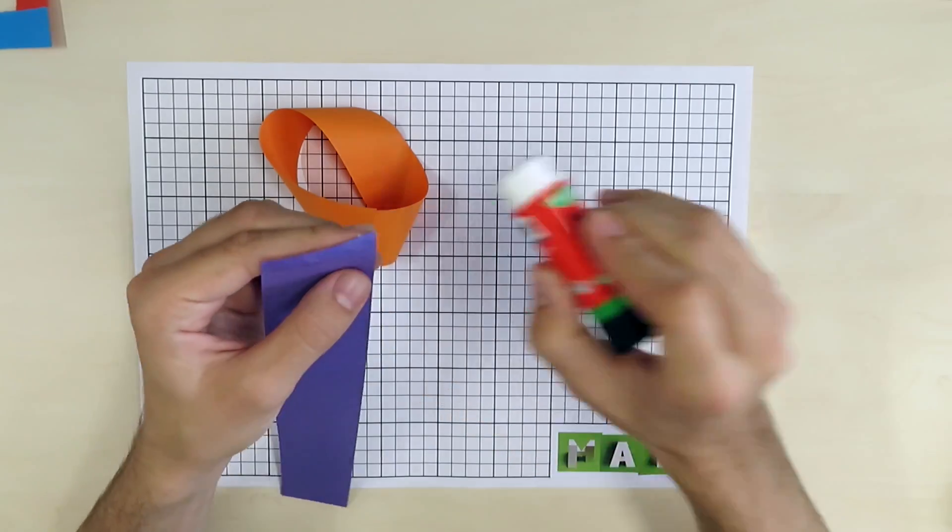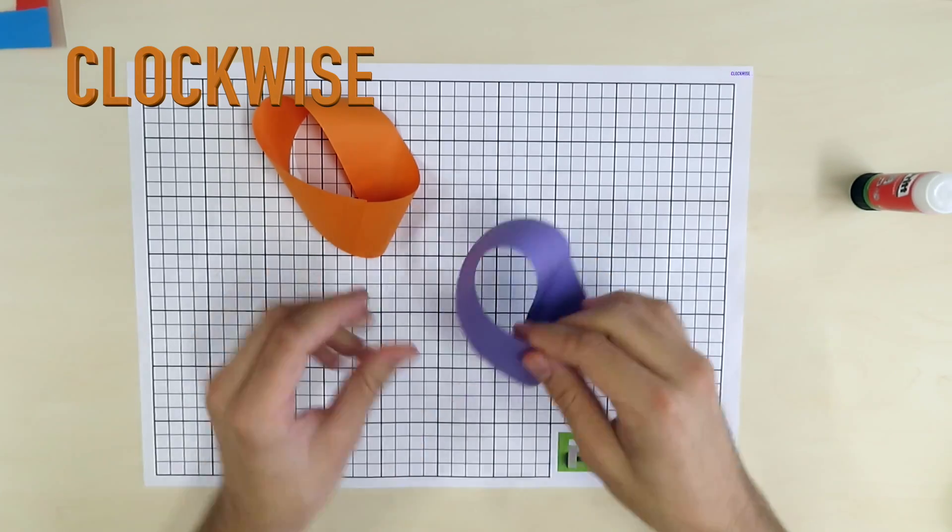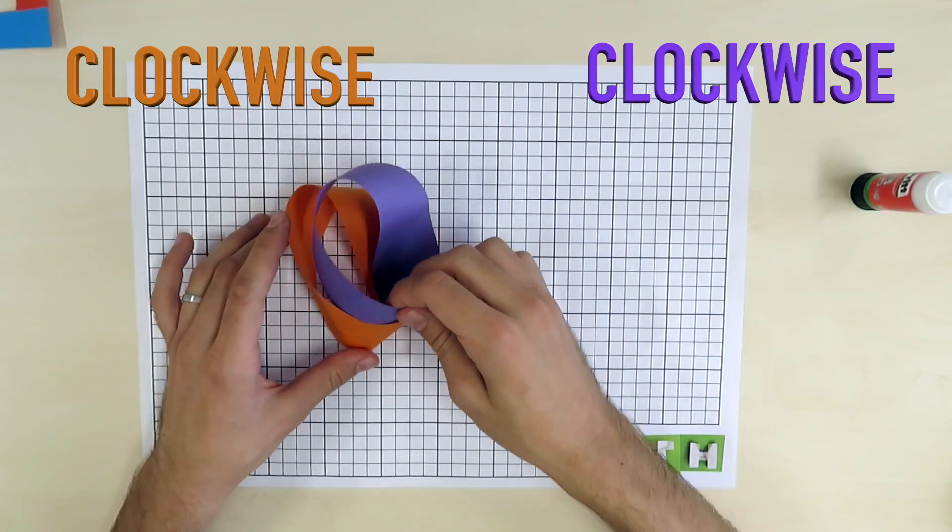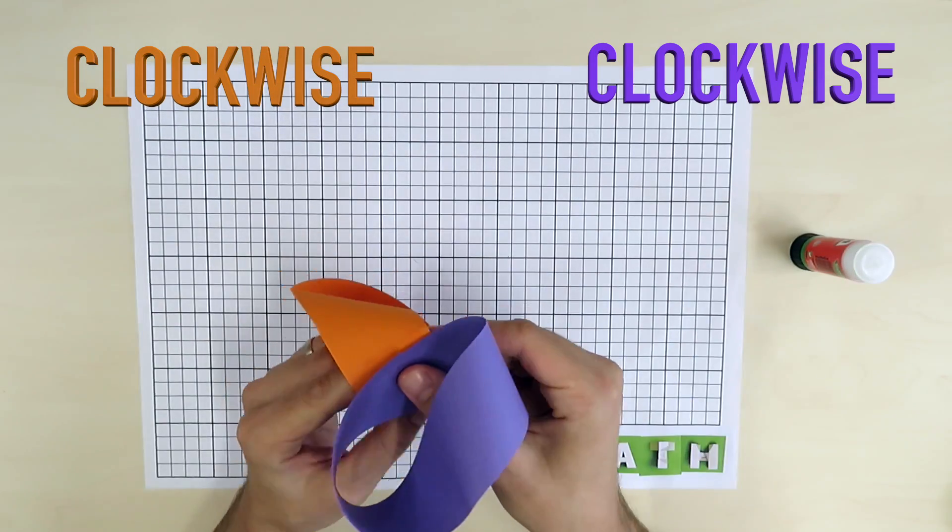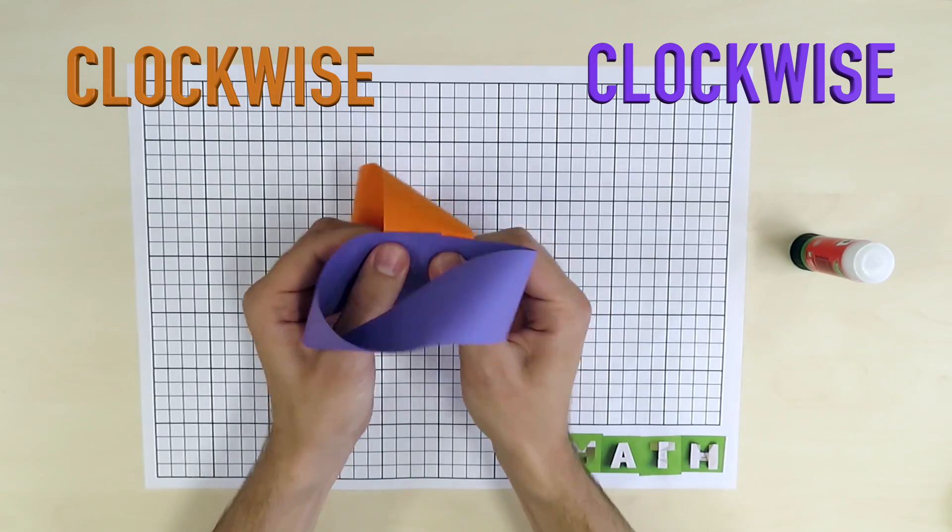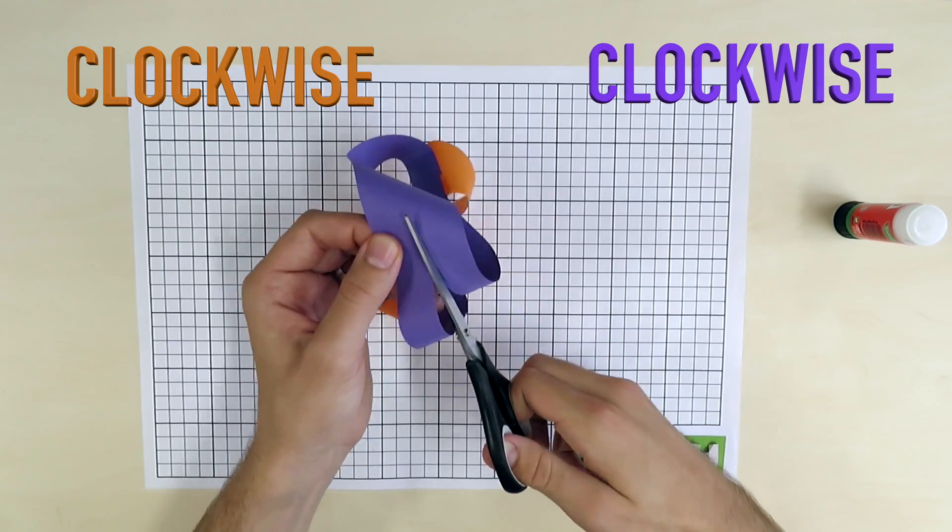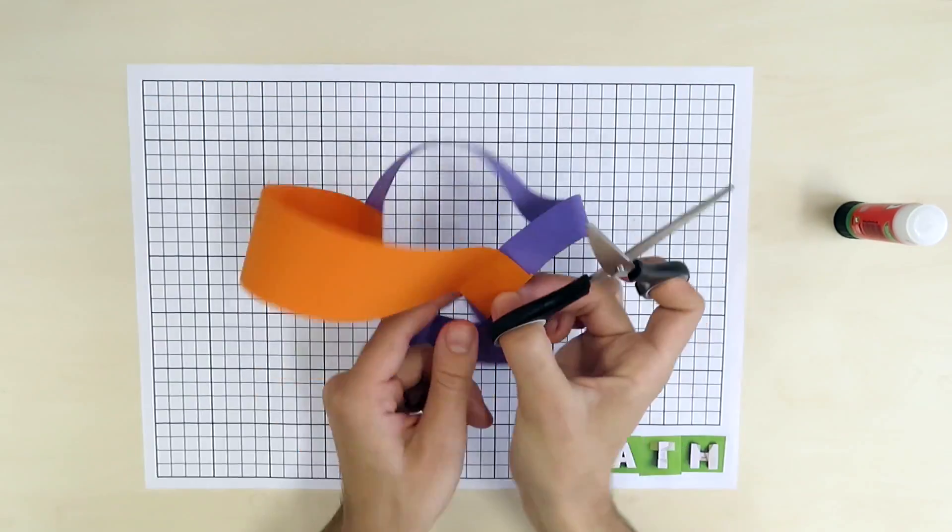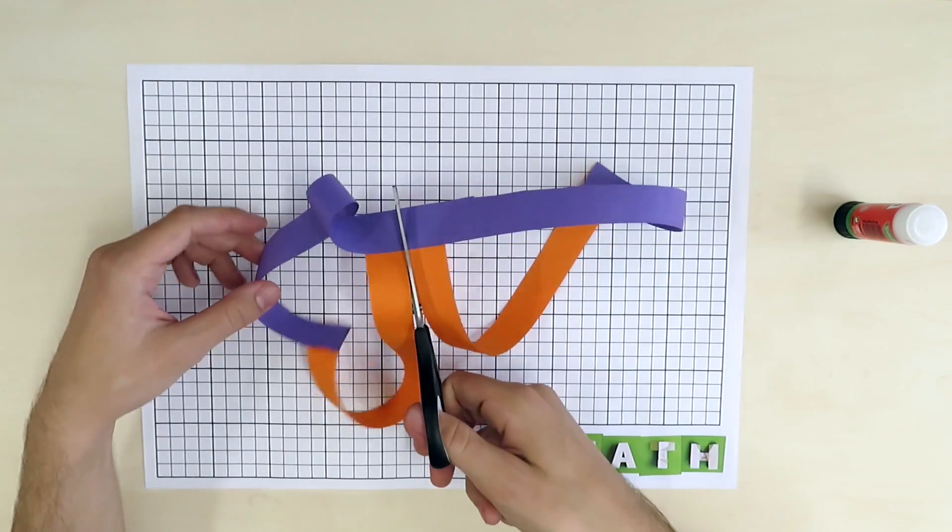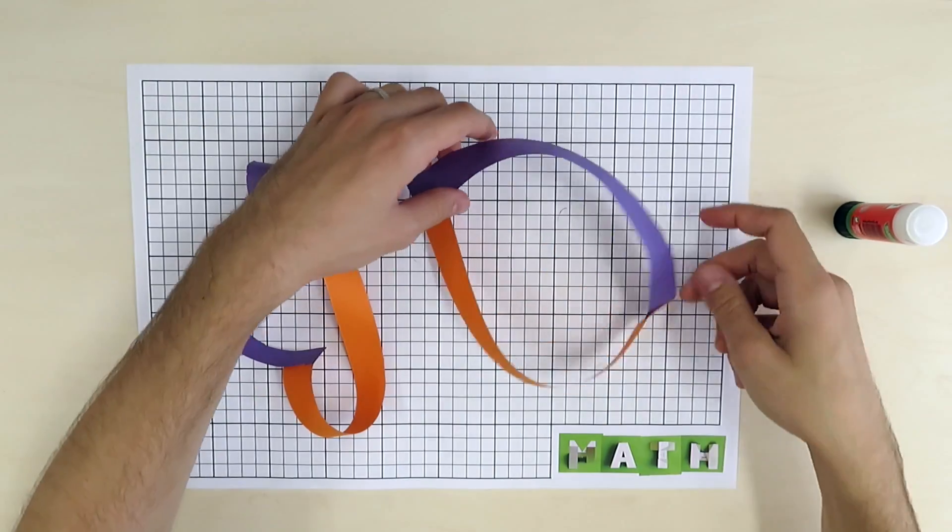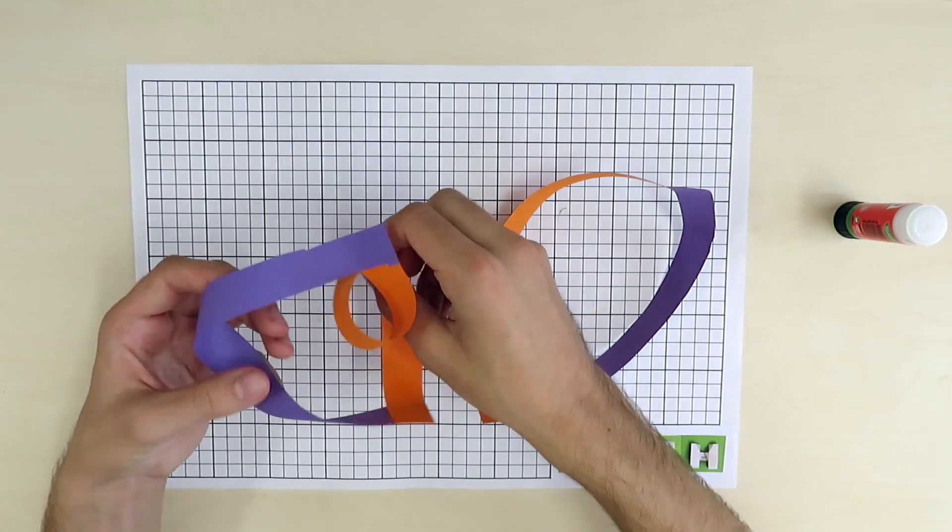However, if we stick together two identical Möbius strips, both clockwise or both counterclockwise and cut them, we get something quite disappointing. Something like a boat, a weird twist and it falls apart. So make sure to be clear when instructing students.